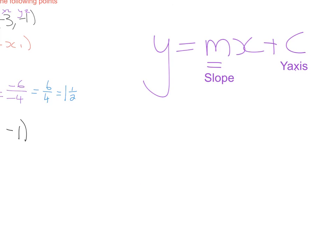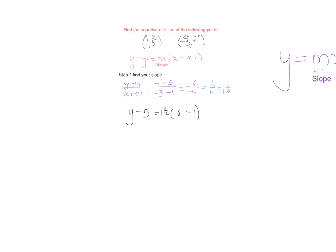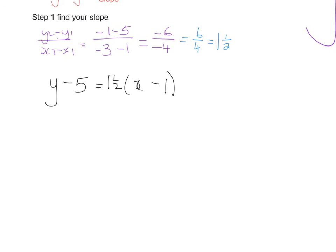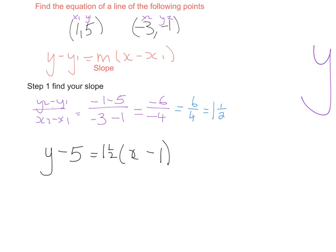So generally I have given the answer here but it's more often than not practice to give it in this form here which means I need to get rid of my brackets first of all and then I need to just have y on this side, everything else on the other. So we will work our brackets out first and I'm going to write y minus 5 equals 1 and a half times x gives me 1 and a half x and 1 and a half times minus 1 gives me minus 1 and a half.